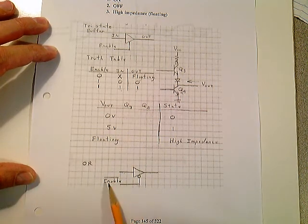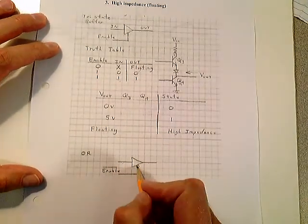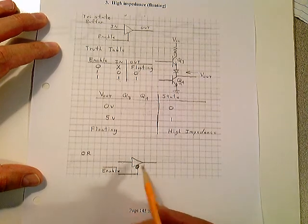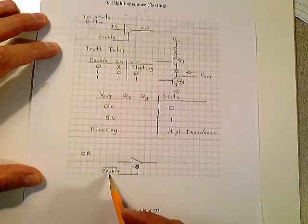Now, they also come as a low true enable. This is pretty popular here where you have a bubble here, and that's just called a tri-state buffer, but it's a low active enable. If you want to float the output, you make this high. If you want to enable this to work, you make it low.